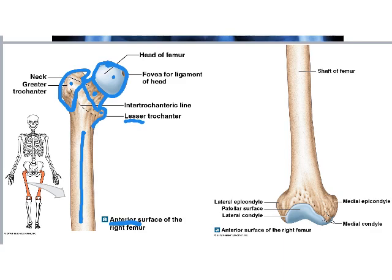Continuing distally down the femoral shaft to the inferior part of the bone, there are a medial and lateral epicondyle — less clinically significant here than on the humerus. Below those are the medial condyle and lateral condyle, which will articulate with the tibia to form the knee joint.